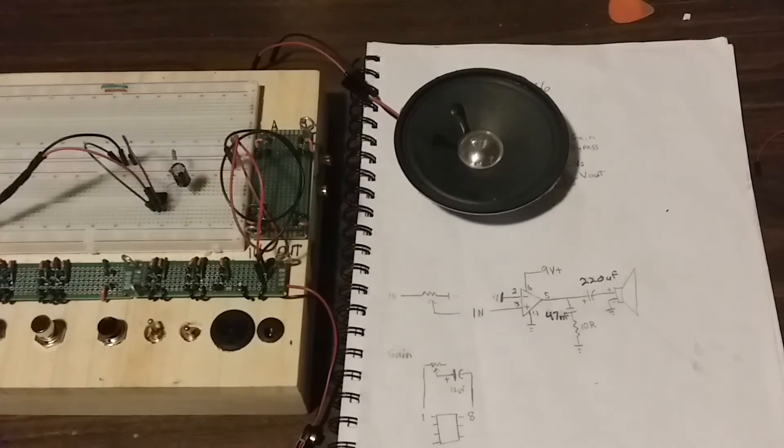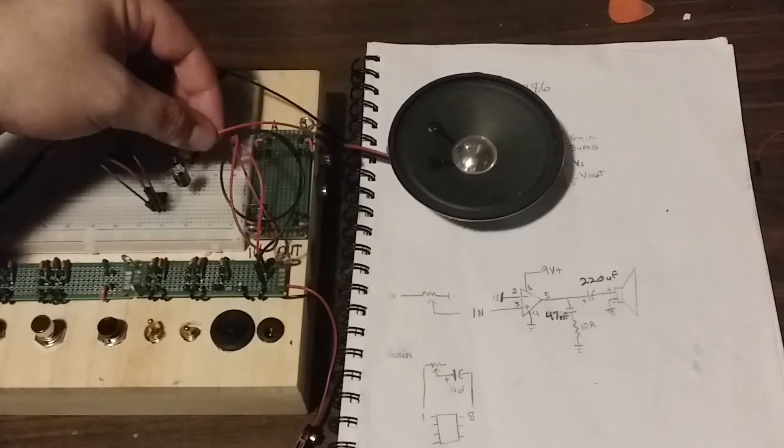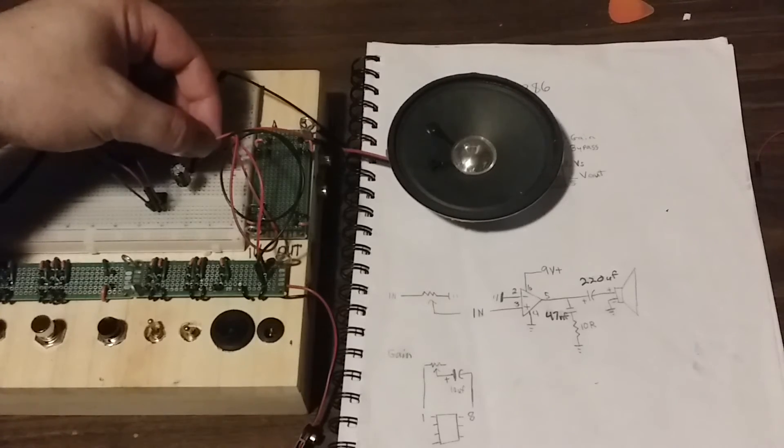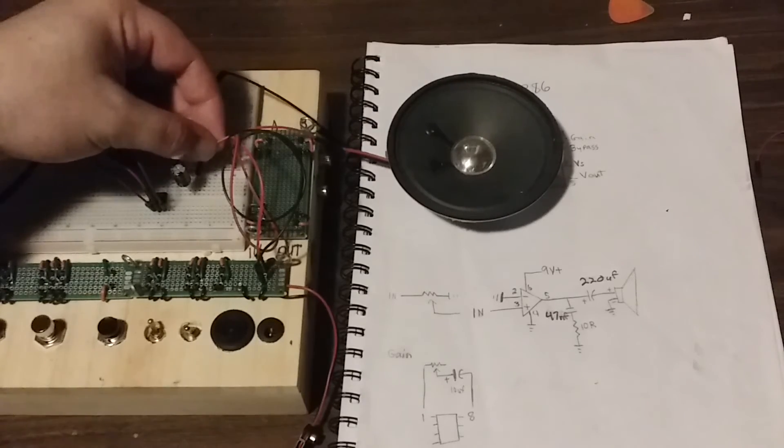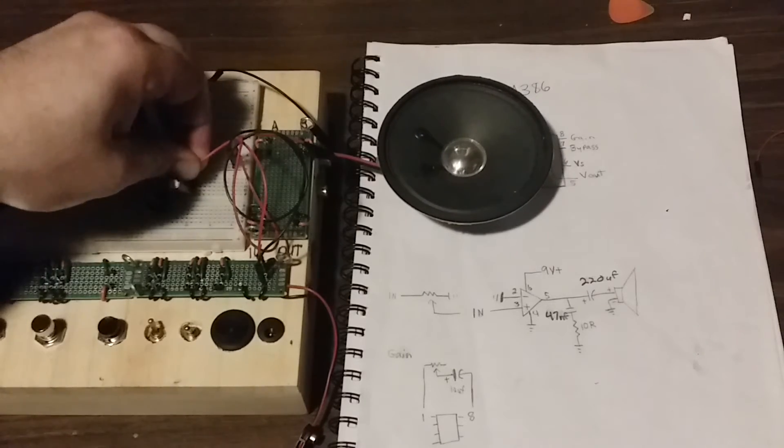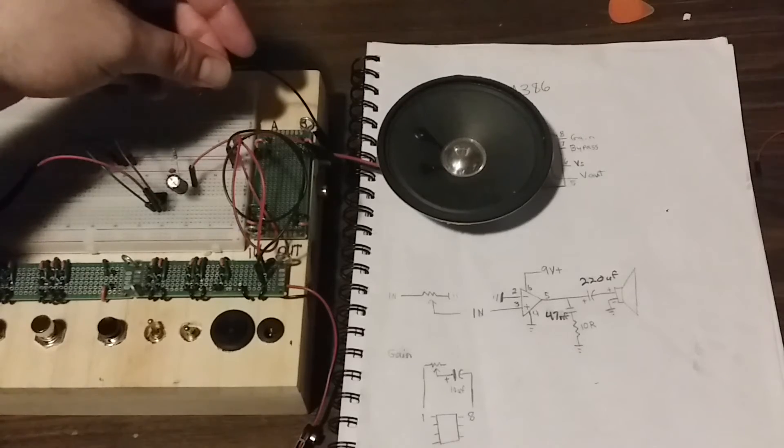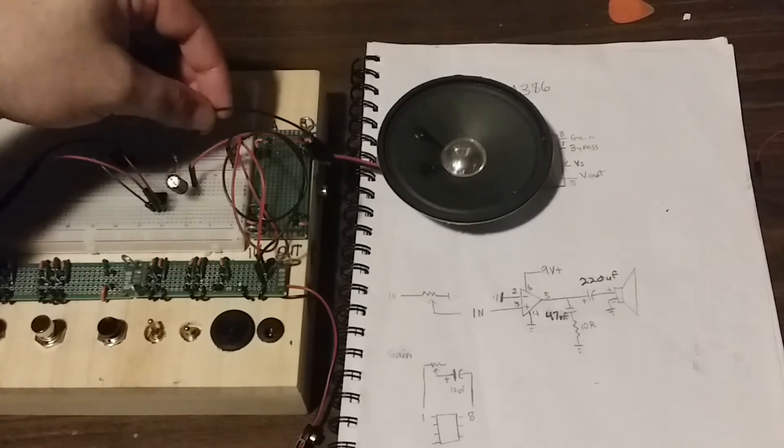Now we can attach our speaker. I just need to plug the positive terminal from the speaker into the same rail that the negative leg of the 220 UF capacitor is plugged into. And I can just plug the negative terminal from the speaker into ground.